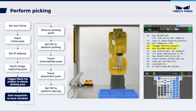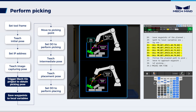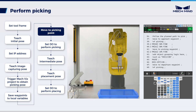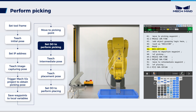Next, the robot will get the planned path from MechViz and save the acquired waypoints to local variables. There are five waypoints in total: the enter bin point, the approach point, the pick point, the retreat point, and the exit bin point. Since smart path in bin has been applied, we need to add two waypoints — the enter bin point and the exit bin point — in addition to the original three. Move the robot through the enter bin point and the approach point to the pick point. After approaching the pick point, set DO to close the gripper to pick the workpiece. Please modify the general output signal ID according to the actual situation.